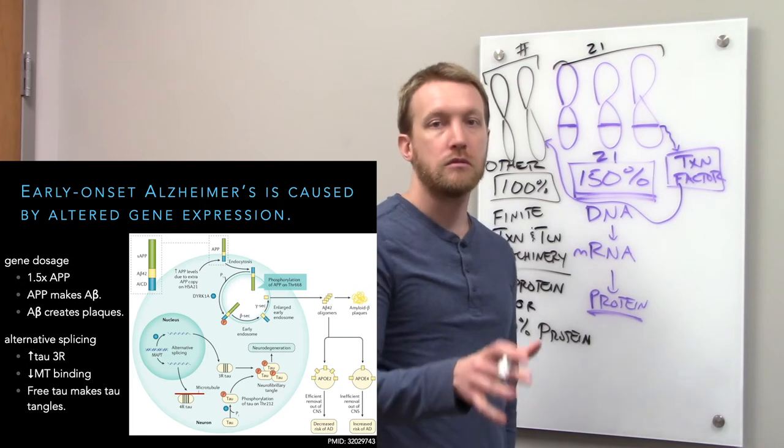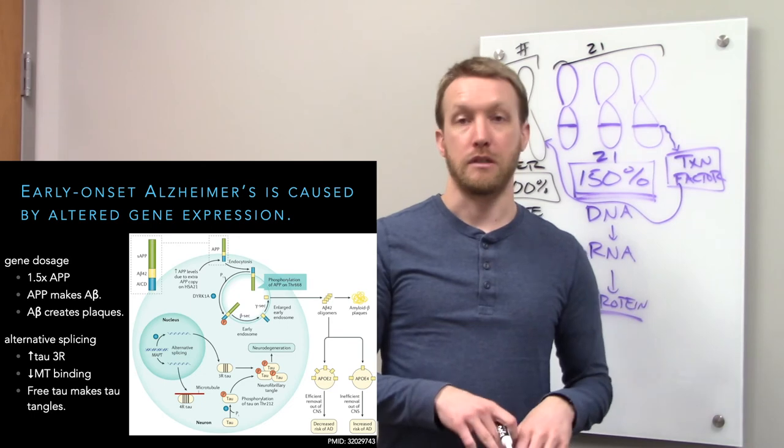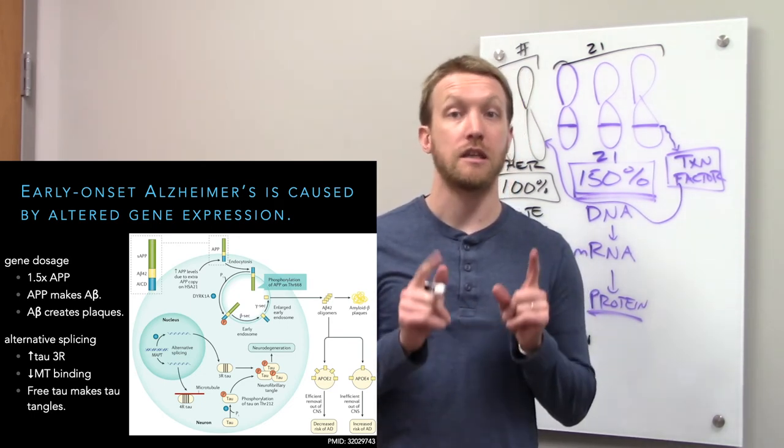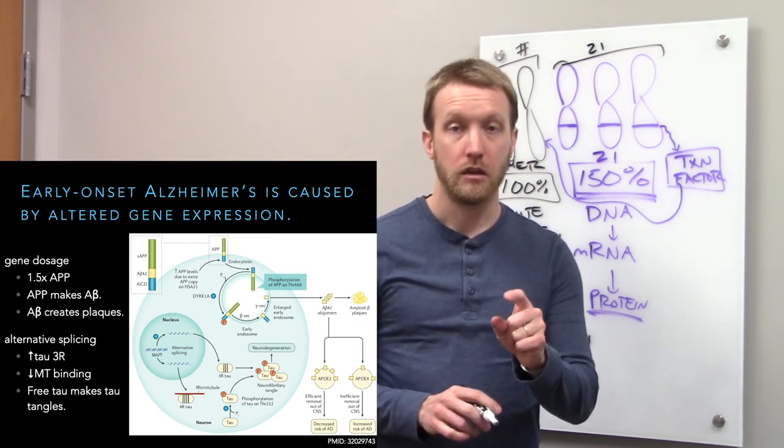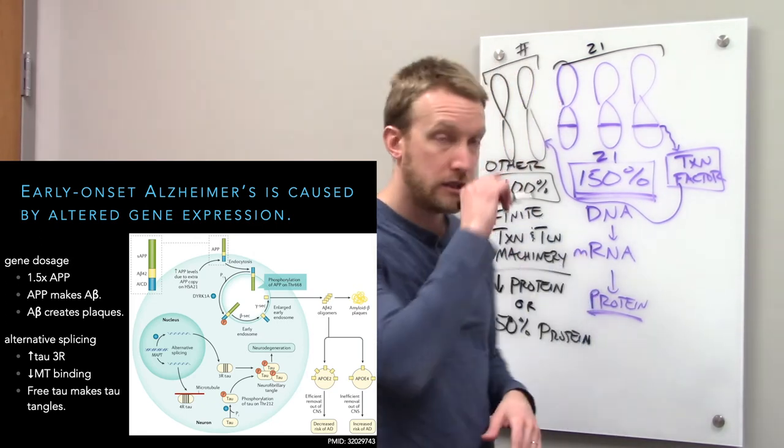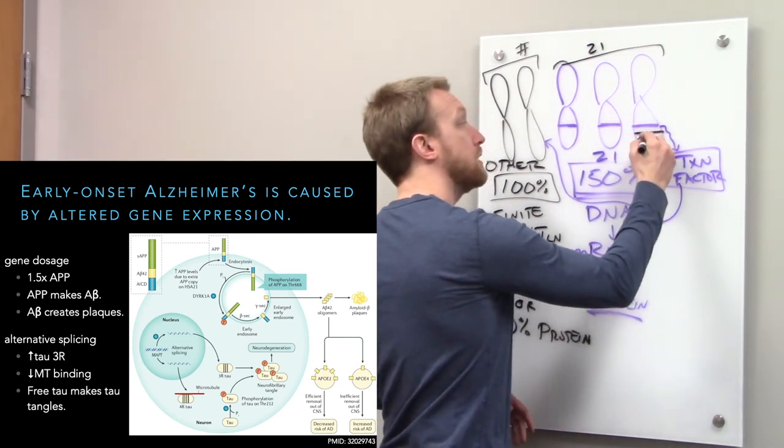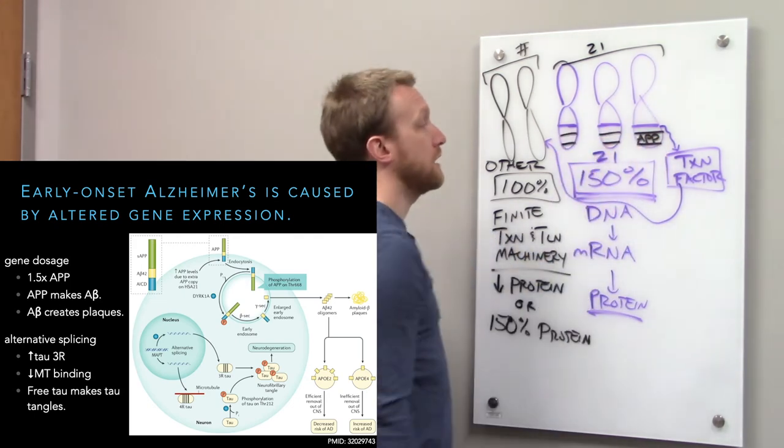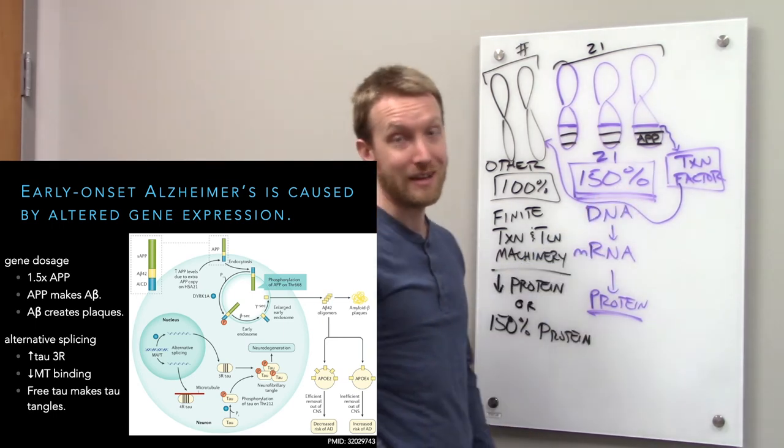Certainly, familial cases of Alzheimer's disease have mutations that increase the production of amyloid beta. Invariably, people with Down syndrome develop Alzheimer's disease. Because on chromosome 21, we have APP, the amyloid precursor protein, which we're going to make at 150% than normal levels.